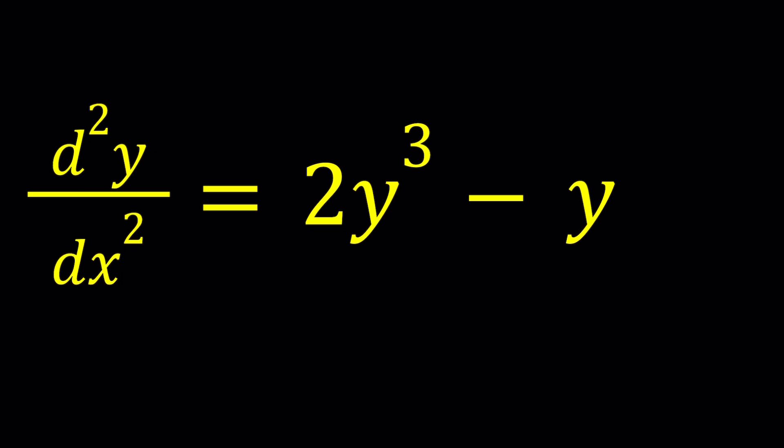This is an interesting equation because instead of the first derivative, we have the second derivative on the left-hand side. d squared y over dx squared means the derivative of y with respect to x. Writing y double prime is more specific notation — it also means the second derivative, but you don't specify with respect to which variable you're differentiating. Most of the time it's x. So let's go ahead and replace d squared y over dx squared with y double prime. y double prime is the second derivative, which is the derivative of the first derivative.